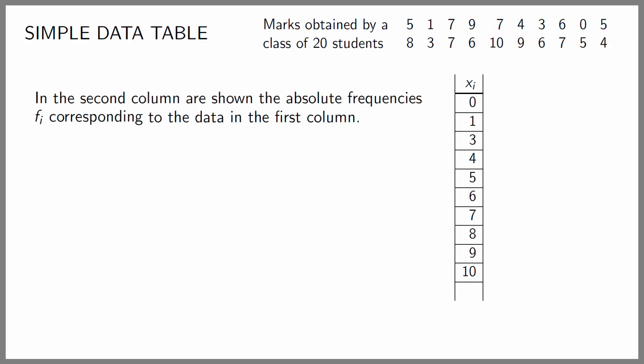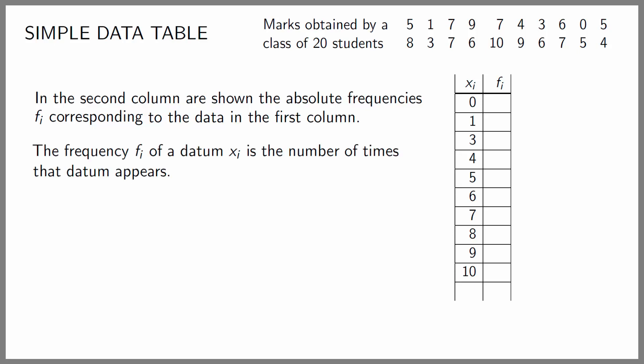In the second column are the absolute frequencies F sub i corresponding to the data in the first column. The frequency F sub i of a datum X sub i is the number of times that the datum appears. In our case the absolute frequencies F sub i given in the second column are as follows.